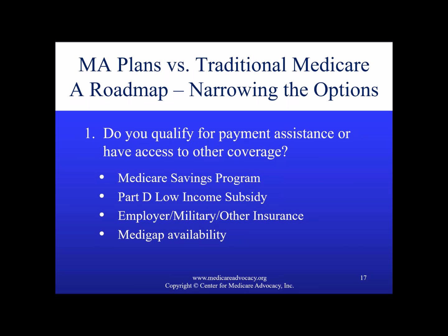Some individuals have employer coverage that is their primary coverage through either their own or a family member's current active employment. When someone has employer coverage that's primary, that will generally preclude Medicare Advantage enrollment. Others have retiree coverage through former employers that, for Medicare beneficiaries, is only offered through a Medicare Advantage plan that an employer contracts with. For those folks who want that retiree benefit, their choice is already made — they have to enroll in a Medicare Advantage plan. As noted earlier, Medigap availability varies significantly for folks under 65, because federal law does not require Medigap plans to sell to folks under 65, though some states have added that extra right.